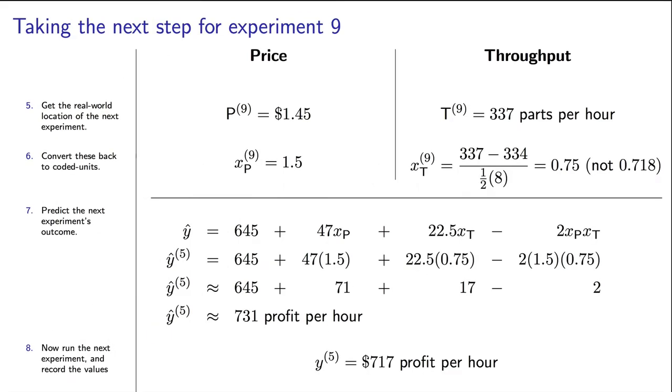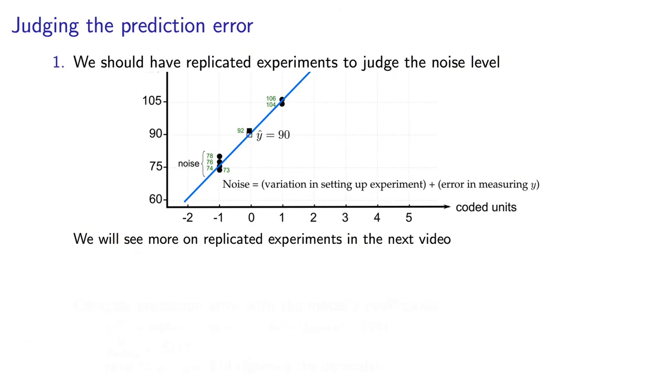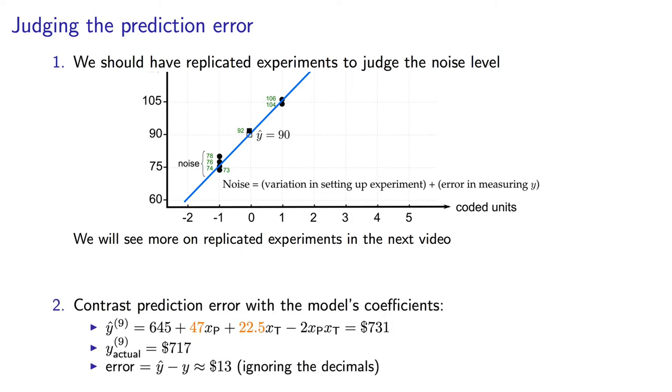You should have been able to do all of the above after watching the prior video. If not, go back to the prior video and recap with those calculations where they were shown in some detail. Now how bad is that prediction error of $13? One way to tell is by comparing it to the value from the noise in the system. And to calculate the noise, we need some replicated experiments, which we haven't done. But if we had the time and budget, we could certainly do that and verify. But a rough way that we can get an estimate of that noise is by comparing it to the coefficient of the main effects in the model. And it is about half the size of the smallest main effect. So that prediction error is not too bad.